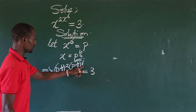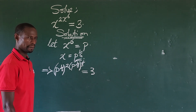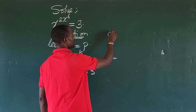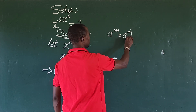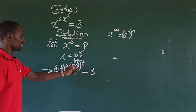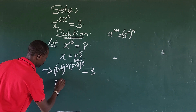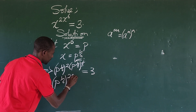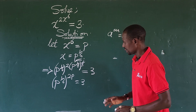This power will cancel out this root. According to the law of indices, which says a to the power of m raised to n equals a to the power of m times n, we use this to open up the expression. So we get p to the power of one over six, all raised to the power of two times p, equals three.